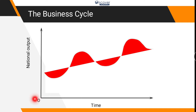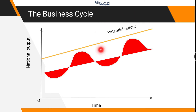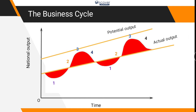How to make the diagram? First of all, we take time on one scale and national output on the other scale. The potential output is what we were expecting, but actually we could not reach that point — rather we had other ups and downs. So the actual output is low, but the potential that we expected from our economy was high, and we could not reach the potential level.